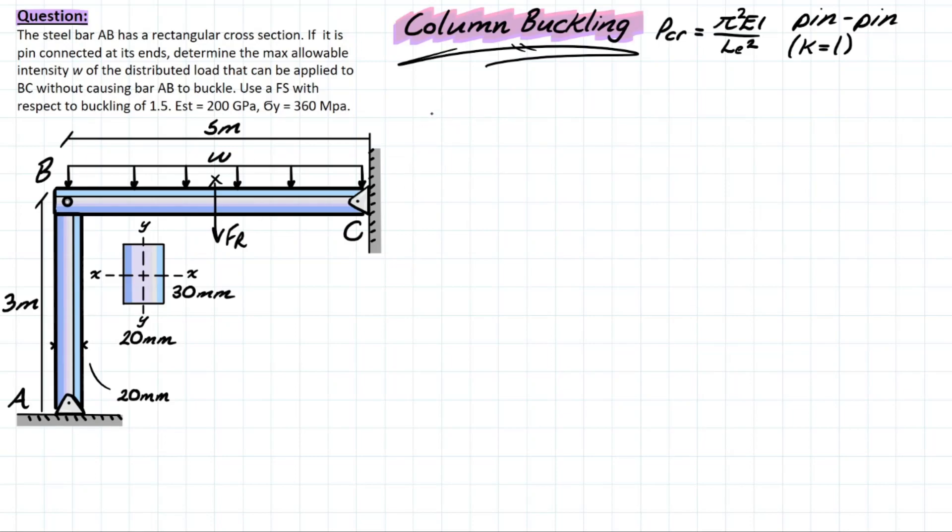We can start by looking at this FR, which I've already drawn, and we can figure out what that FR is simply by taking the length of that member times the intensity, which is w. If we think about the reactions of this pin-pin member, we're simply going to have one-half of this at each end. So in our case, which is the axial load acting on the column, it's going to be 5w over 2, which will give us 2.5w.